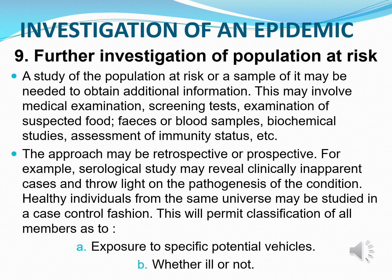A further investigation of the population at risk may need to be done in order to obtain additional information. This may involve medical examination, screening tests, examination of suspected food, feces or blood samples, biochemical studies, and/or assessment of the immunity status. The approach may be retrospective or prospective. For example, a serological study may reveal clinically inapparent cases and throw light on the pathogenesis of the condition. Healthy individuals from the same universe may be studied in a case-controlled fashion, permitting the classification of all members of the community as to exposure to specific potential vehicles, whether ill or not.